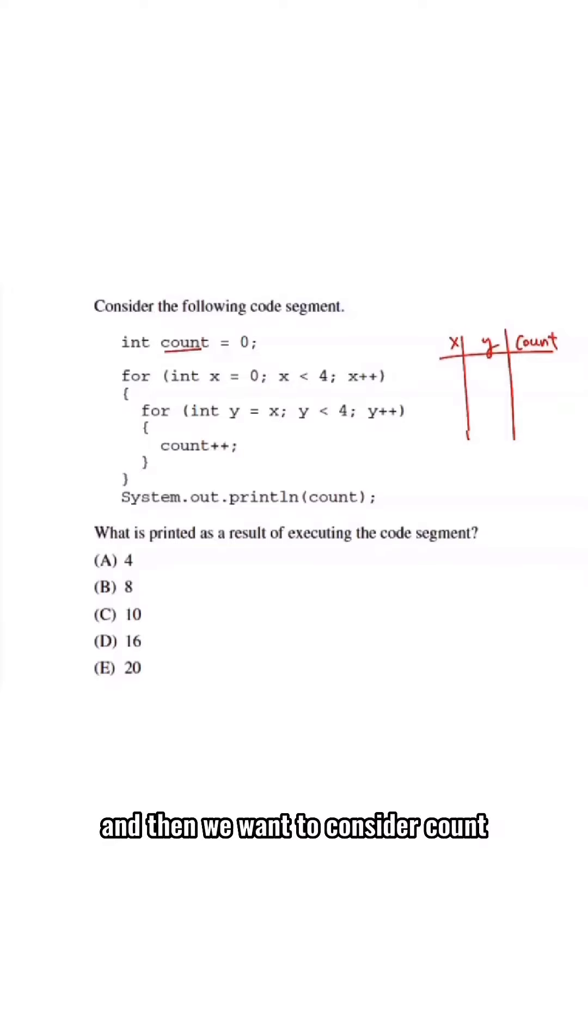In the first iteration of the loop, x starts as 0, y will therefore start as 0, and then we'll go up to, but not including 4, so it'll get to 3.